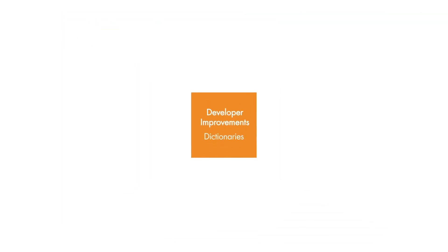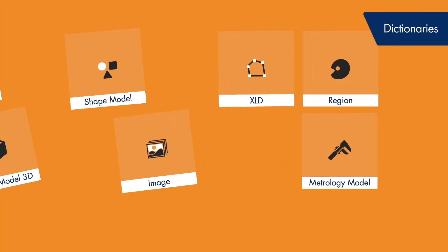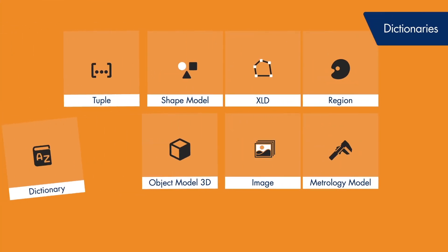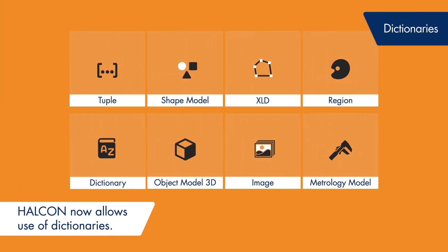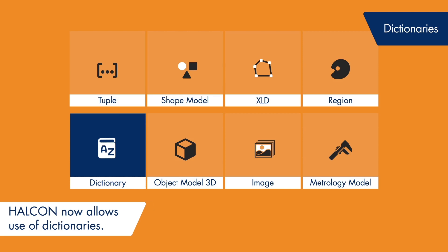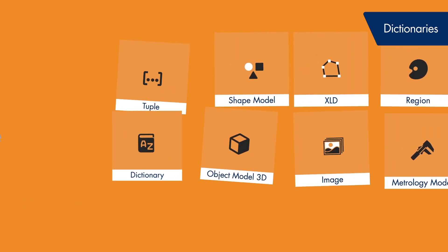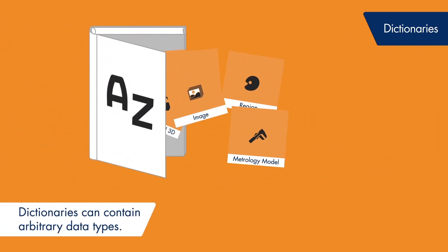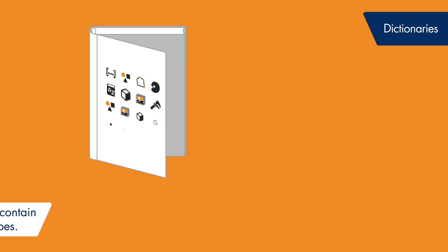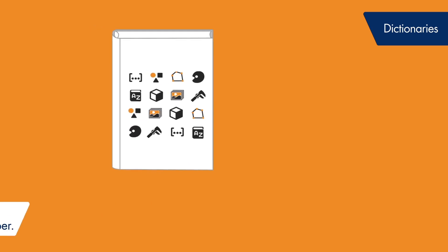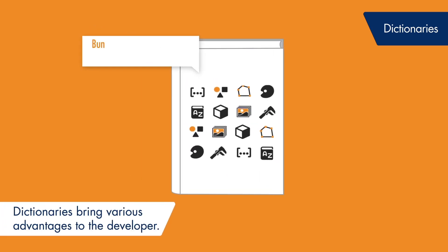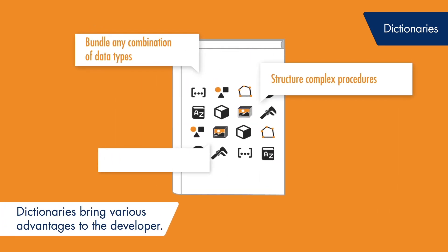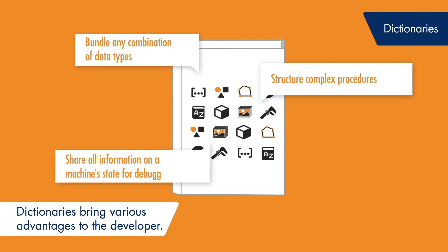HALCON 1811 introduces a new data type called dictionary. Dictionaries enable developers to bundle arbitrary data into a single variable, making it easier to, for example, structure complex procedures or share machine data for debugging.